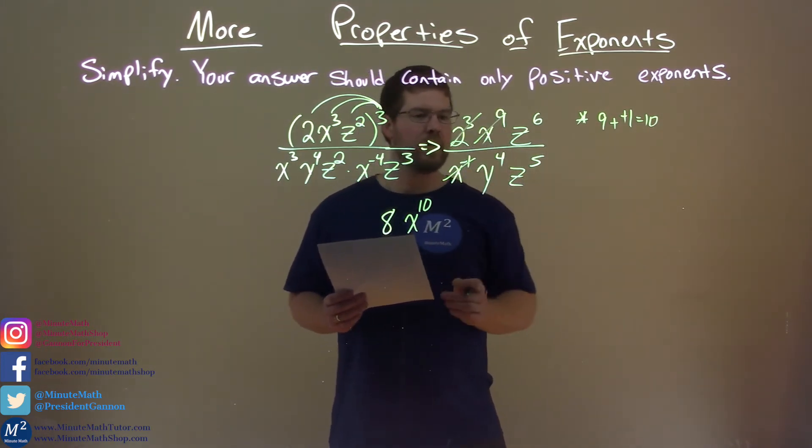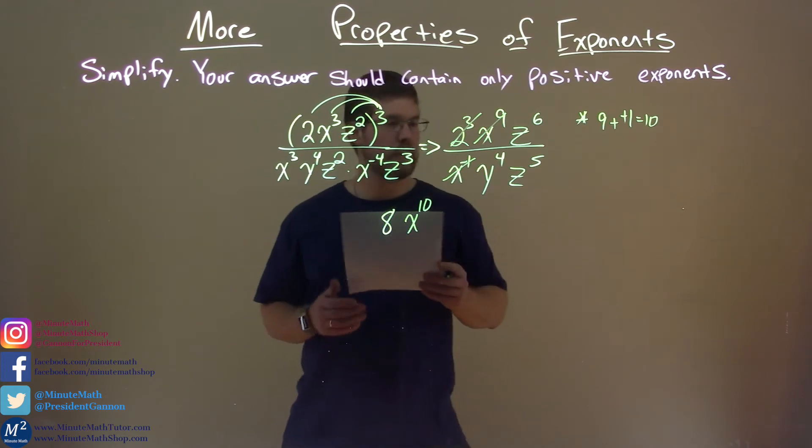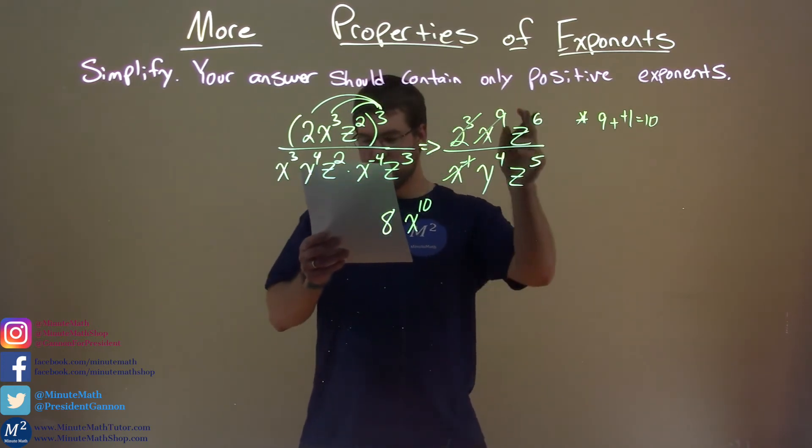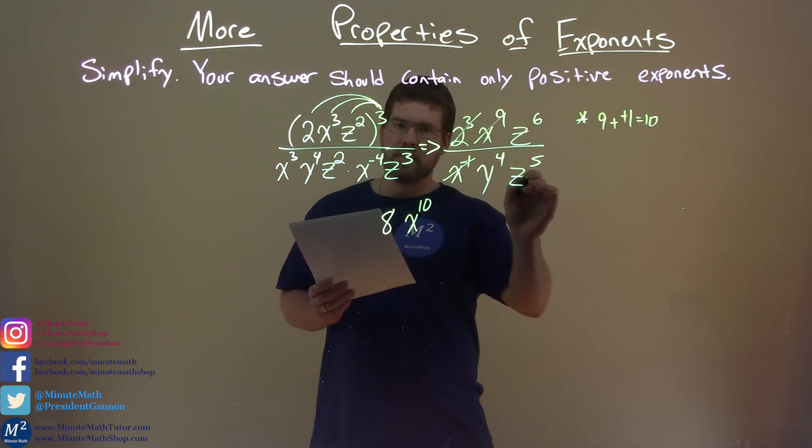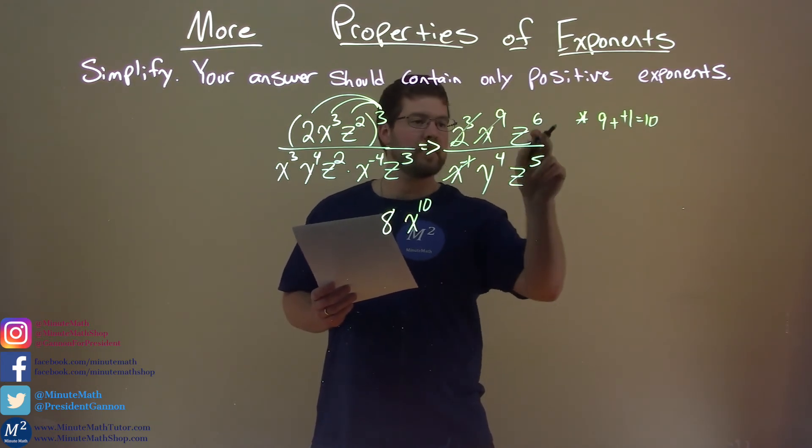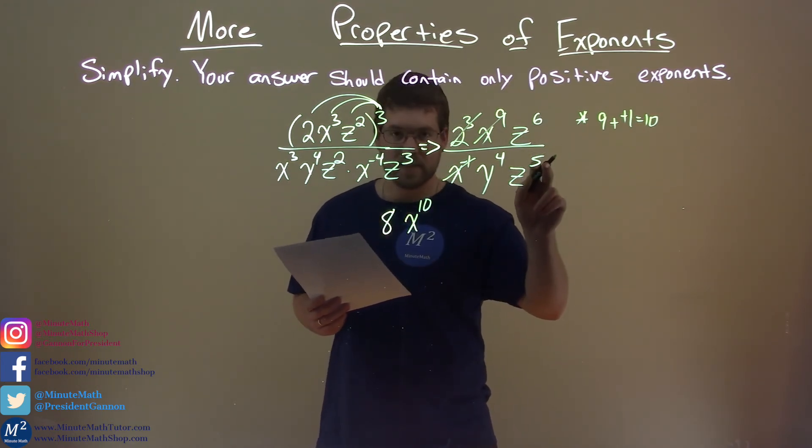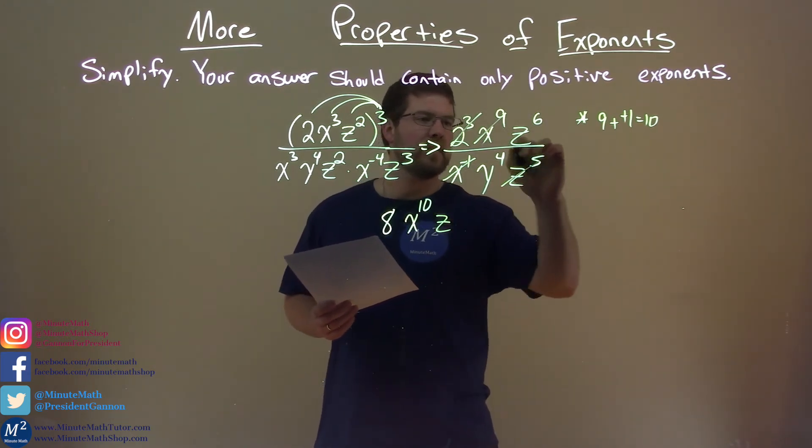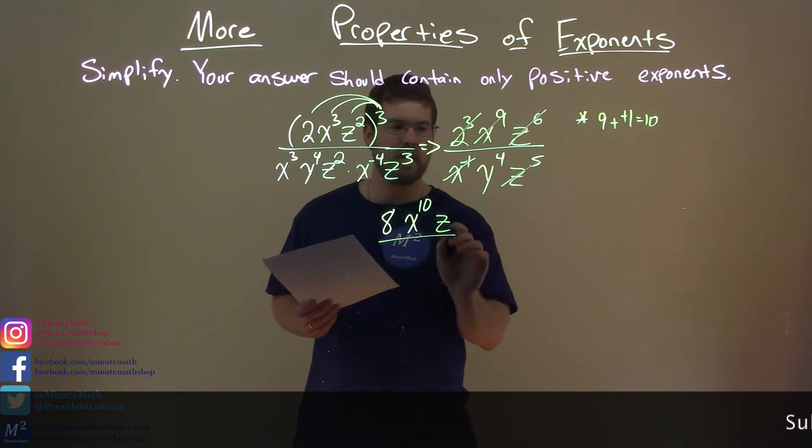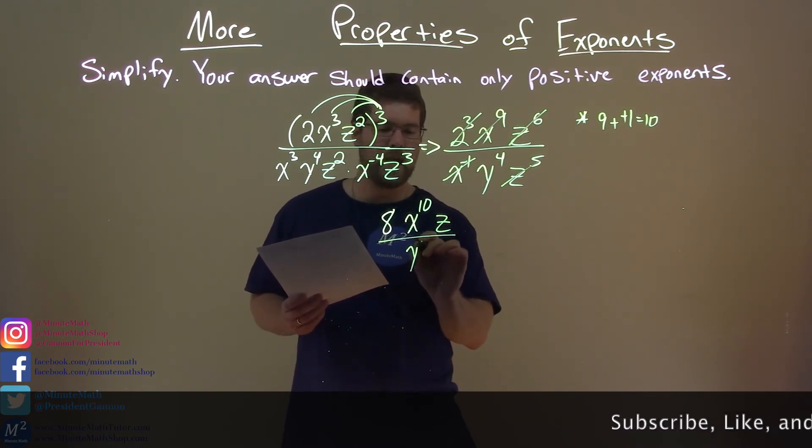Let's deal with the z's next, the next thing in the numerator here. z to the sixth divided by z to the fifth. Subtract the exponents. 6 minus 5 is 1. z to the 1, we just write z. z is gone. Now, we're left with just that y to the fourth power in the denominator.